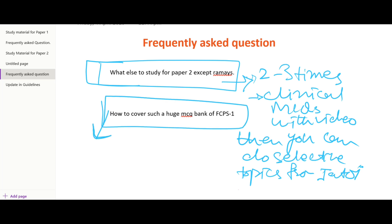And one other question frequently asked is: how to cover such a huge MCQ bank of FCPS-1? Yes, there are a lot of books available and lot of papers available. Even in Ramay's, there are many papers - above 30 to 35 papers are available in Ramay's.